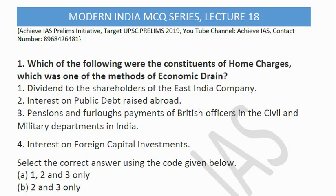The first question is: which of the following were the constituents of home charges, which was one of the methods of economic drain? As you know, the British economically drained India, and the economic drain theory was given by Naoroji in his book 'Poverty and Un-British Rule in India.' The options are: (1) dividend to shareholders of the East India Company, (2) interest on public debt raised abroad, (3) pension and furlough payments of British officers in civil and military departments in India, (4) interest on foreign capital investments. All four were constituents of home charges.